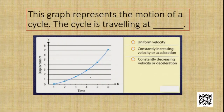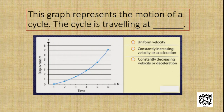Let us move on to another question. The graph represents the motion of a cycle. You need to find out whether the cycle is traveling at uniform velocity, constantly increasing velocity (acceleration), or constantly decreasing velocity (deceleration). As time increases, the displacement of the cycle is increasing and not uniform — it is increasing. That means the velocity is constantly increasing, so the answer is constantly increasing velocity or acceleration.